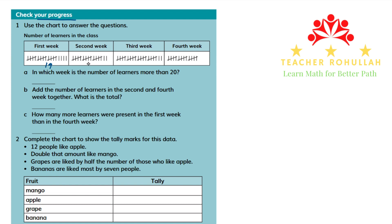In the second week, we have 5, 10, 15, 17 students. In the third week, we have 5, 10, 15, 20, 22 — 22 students. And in the fourth week, we have 15 students.